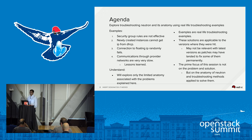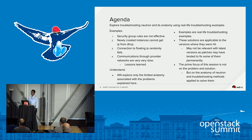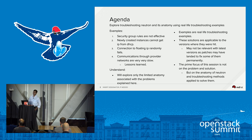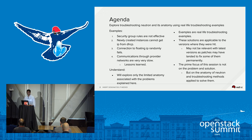A brief agenda on what I'm going to talk about today. I'm going to take real-life examples to show you how to explore the anatomy of Neutron and how we can troubleshoot a Neutron problem. The first problem is related to Neutron security groups. The second problem is a failure to get a DHCP IP address from the Neutron DHCP server. The third problem is random failure while connecting to Neutron floating IPs. The fourth problem is communication through provider networks being very slow. And finally, I will cover some lessons learned during the troubleshooting.